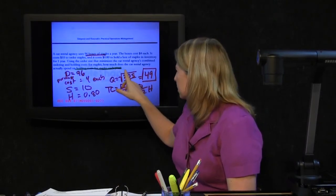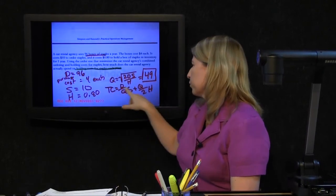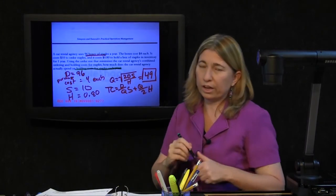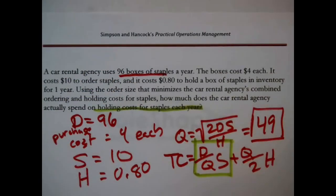But be careful, they're actually asking about the annual holding cost. And we remember that this familiar total cost formula is the combined ordering cost and holding cost. The part with the S in it is the ordering cost. The part with the H in it is the holding cost. And this particular question is only asking about that part.